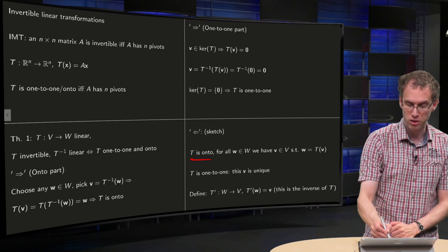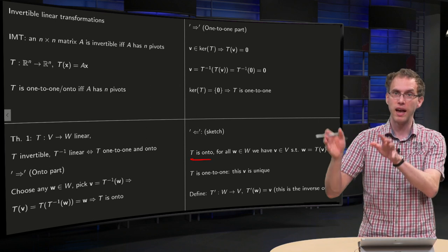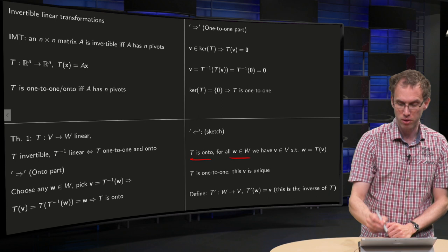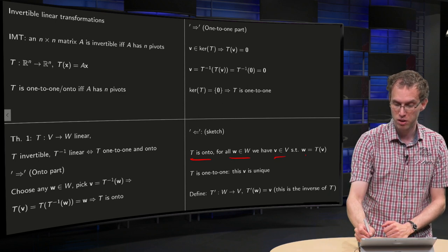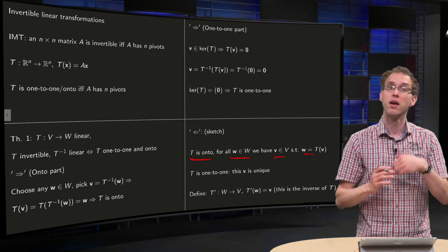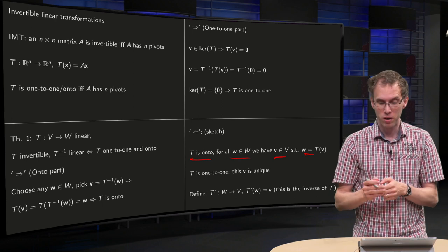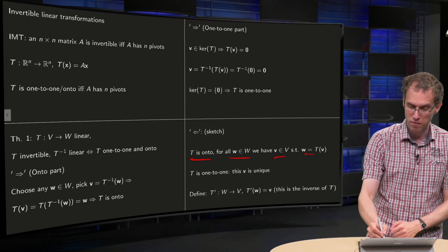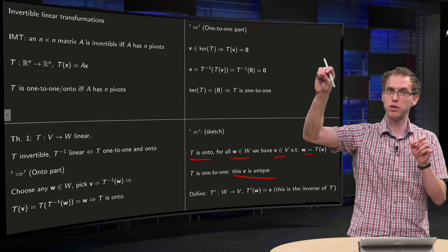T is onto, so you can pick any w in your codomain, and then you know that there is a v, such that w equals T(v). Moreover, your T is also one-to-one, so you know that this v is unique.